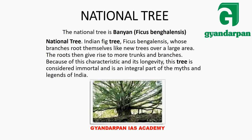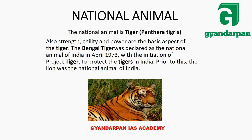The National Tree is the Banyan tree, and its botanical name is Ficus benghalensis. The National Animal is the Tiger, and its scientific name is Panthera tigris. Before 1973, the national animal was Lion, but in 1973 the government conducted a tiger census and launched Project Tiger, after which the Tiger became the national animal.